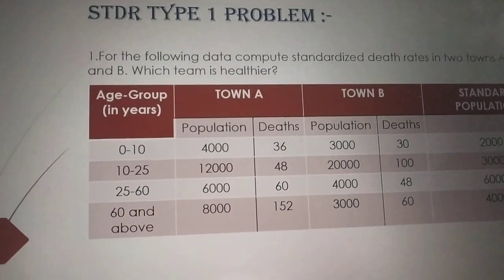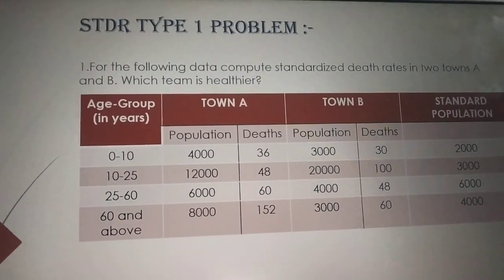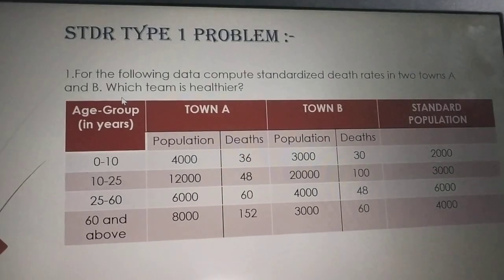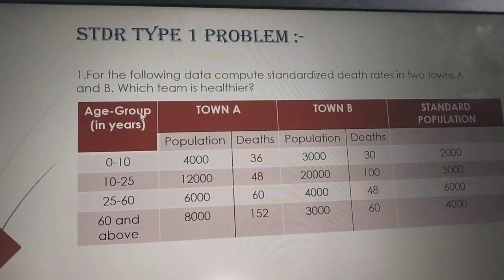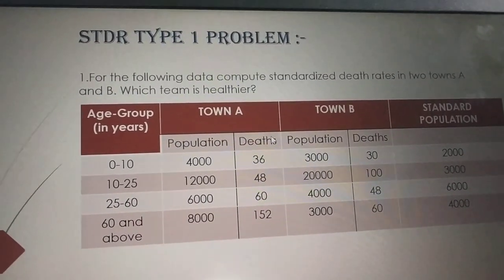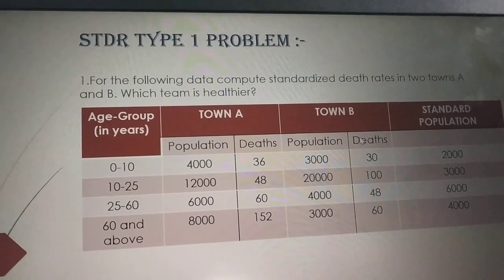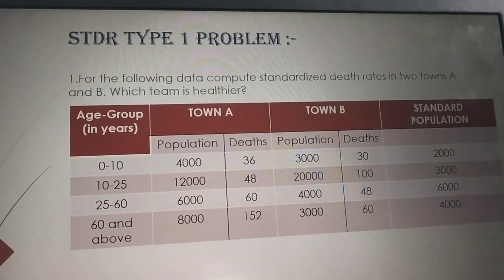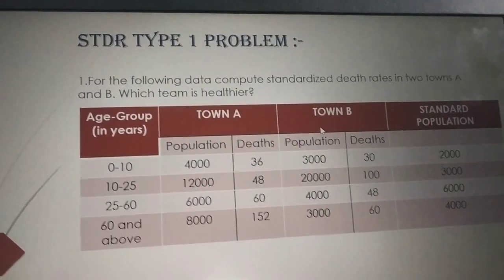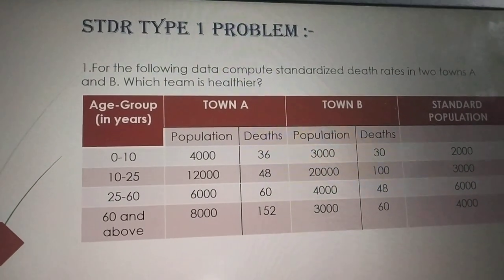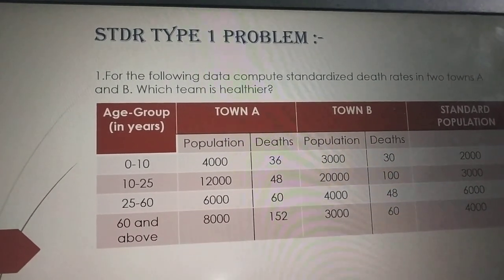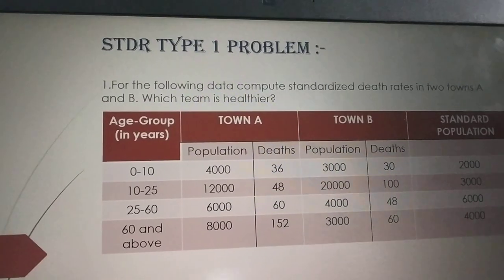Here we have the type 1 problem. For the following data, compute standardized death rates in two towns A and B, and find out which town is healthier. The data has columns: age group, town A population and deaths, town B population and deaths, and the last column is standard population, which is common to both town A and town B. We need to individually find out town A deaths and town B deaths, then conclude which is healthier.